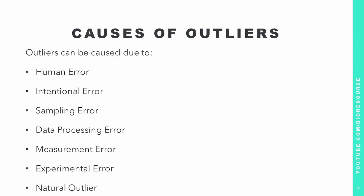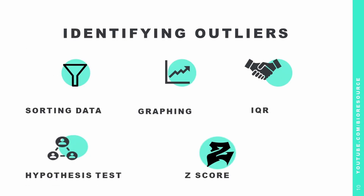Common causes of outliers include human error such as typing errors, intentional errors like dummy outliers inserted to test detection methods, sampling errors from extracting or mixing data from inaccurate or various different sources, data processing errors from data manipulation or unintended mutation of the dataset, measurement error due to instrumental error, and experimental error from the data extraction process or experiment planning and execution. Outliers can also occur naturally in the dataset.